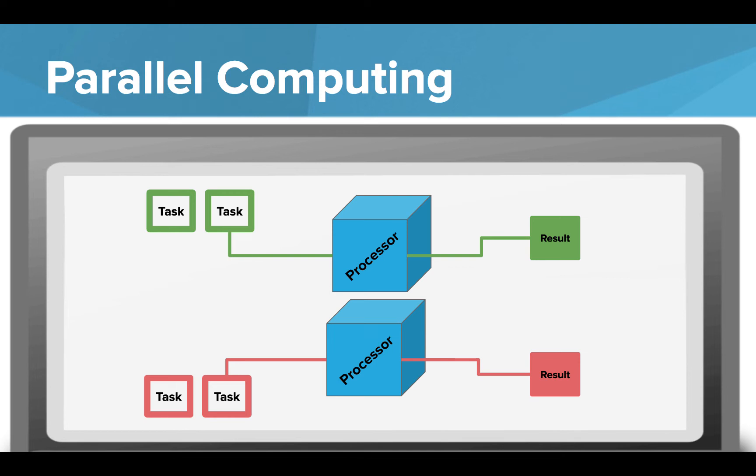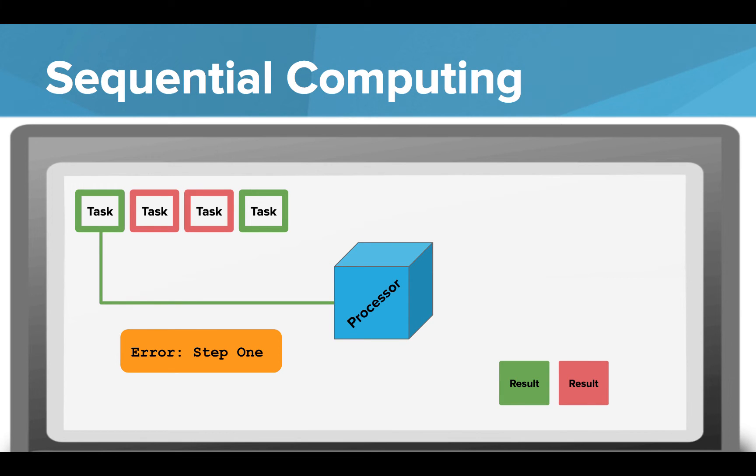So this of course helps with speed, but there are a few challenges when using parallel computing. Let's say there's an error in step 1 of the program. With parallel computing, it might be a little harder to find the bug. Was it in the green step 1 or the red step 1? We'd have to check each one. Now this might not seem like a big deal with only this many tasks, but this can become a big problem if we add more and more processors. If we go back to sequential computing, we can find the bug right away because we're only using one processor. We know exactly which step 1 they're talking about. The steps are done in order.